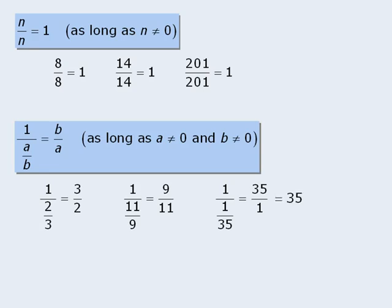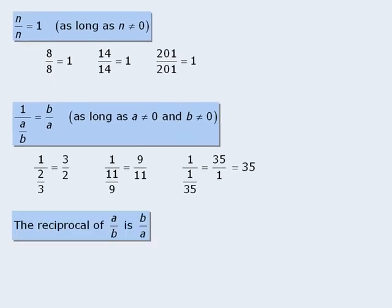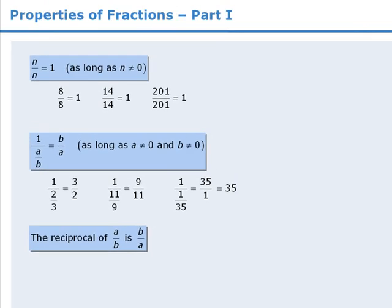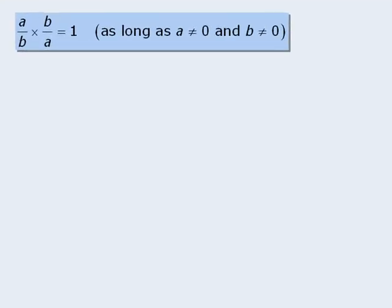In each case, notice that we are merely taking the fraction in the denominator and flipping it. This brings up an important definition: the reciprocal of a over b is b over a. In other words, the reciprocal of a fraction is the flipped-over version of that fraction. Another property is as follows: the fraction a over b times the fraction b over a is equal to 1. In other words, the product of a fraction and its reciprocal is 1.